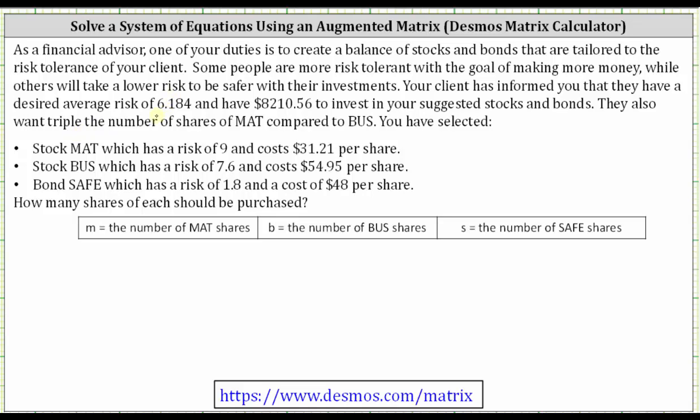Because the average risk needs to be 6.184, we'll have to write an equation for the weighted average of the risk of the three investment options. Since MAT has a risk of 9, BUS has a risk of 7.6, and SAFE has a risk of 1.8, the weighted average risk is (9M + 7.6B + 1.8S) divided by the total number of shares, which is M + B + S. And this must equal the desired risk of 6.184.